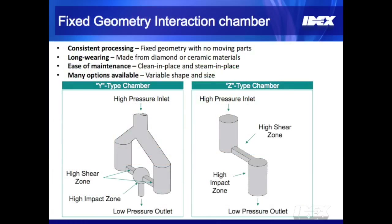These are cartoons of the two different types of interaction chambers we sell. The one on the left is a Y-type interaction chamber, ideal for emulsions and liquid-only formulations. The one on the right is the Z-type interaction chamber, ideal for formulations that contain solids. Both are made out of very wear-resistant material like polycrystalline diamond, and they can be cleaned in place and steamed in place. They come in a variety of sizes.